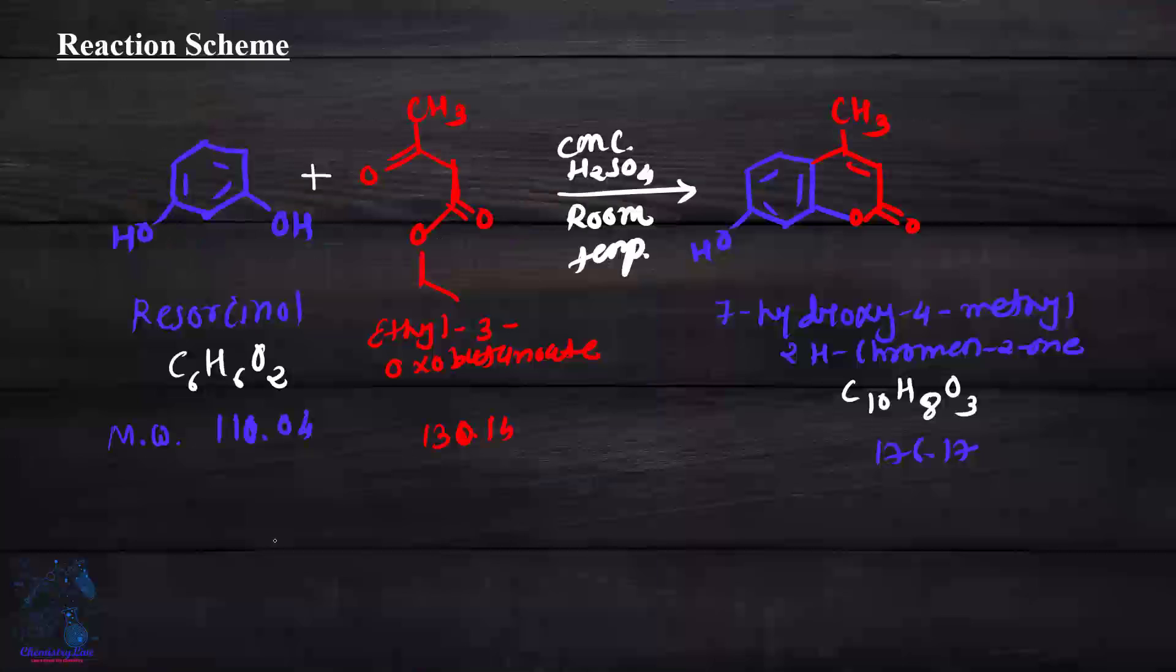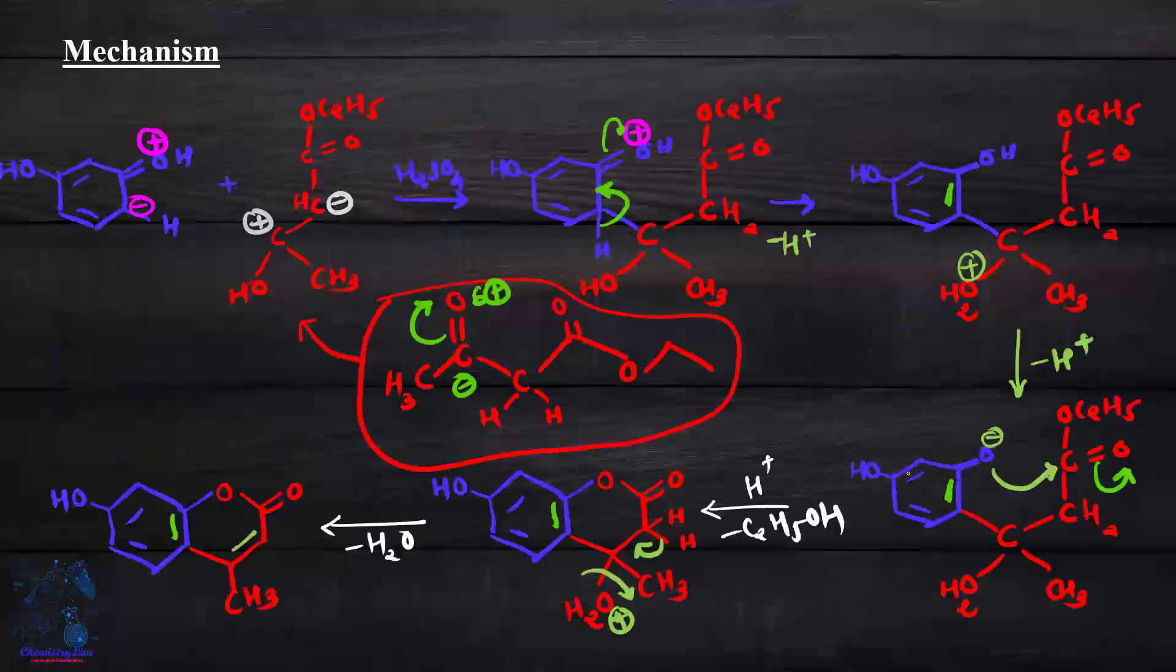Now we'll switch to the main portion, the reaction scheme. In the reaction scheme you see resorcinol, ethyl acetoacetate or ethyl 3-oxobutanoate, and our product 7-hydroxy-4-methyl-2H-coumarin. These two products come together using concentrated sulfuric acid as an acid catalyst at room temperature. We'll proceed to the reaction mechanism.